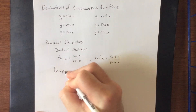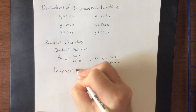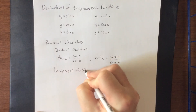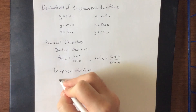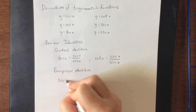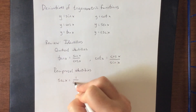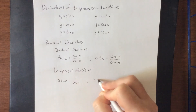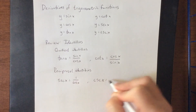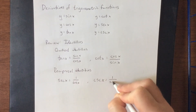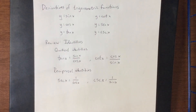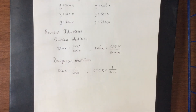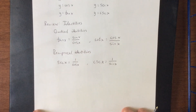Additionally, we'll need some reciprocal identities. The reciprocal identities tell us that the secant of x is equal to 1 over the cosine of x, and that the cosecant of x is equal to 1 over the sine of x. There are more reciprocal identities than these, but these are the two we need ready for what we're about to do.